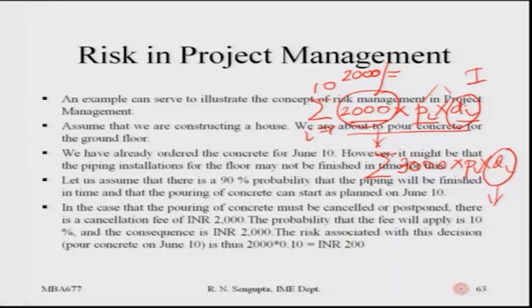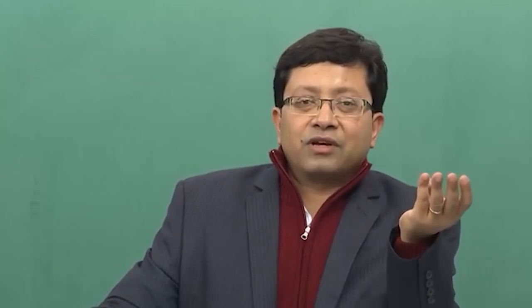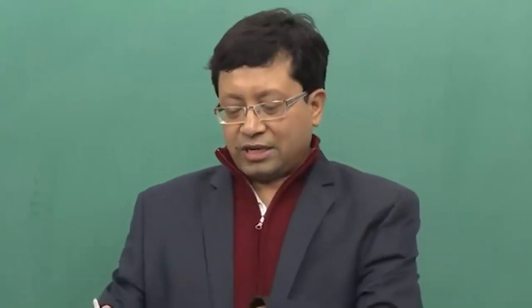Next, consider that the probabilities are also changing, which is absolutely possible. Due to the non-arrival of cement, problems with the cement mixer, or different types of problems, the probability may increase or decrease. In that case, even though I used the symbol PI in both equations, the values of the probabilities would be different. Hence, the total cost of risk would depend on the probability, the number of days, and the rate of loss — two thousand rupees for the first five days and three thousand for the second instance.